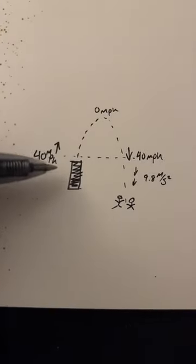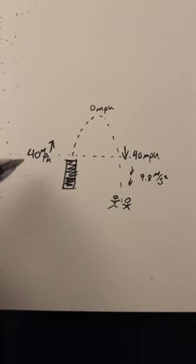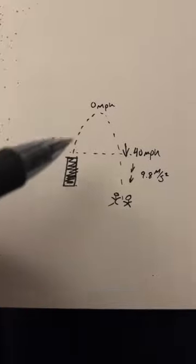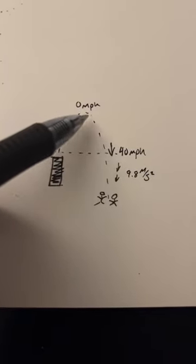So basically here you have the cannon and then it shoots the candy out. Let's say it shoots it out at a force of 40 miles per hour. It goes in this arc form, it stops up here, and